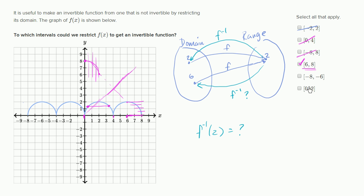Negative eight to negative six — well yeah, that's the same situation on the other side. Over this interval we do pass the horizontal line test, so that looks good as well. And then zero to two — over that interval we also pass the horizontal line test, so that looks good as well.